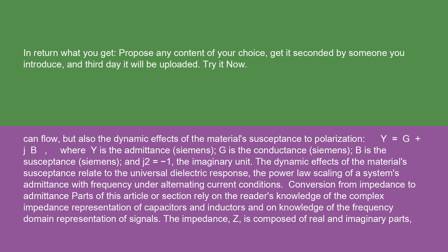Y = G + jB, where Y is the admittance in Siemens, G is the conductance in Siemens, B is the susceptance in Siemens, and j² = -1, the imaginary unit. The dynamic effects of the material's susceptance relate to the universal dielectric response, the power law scaling of a system's admittance with frequency under alternating current conditions.